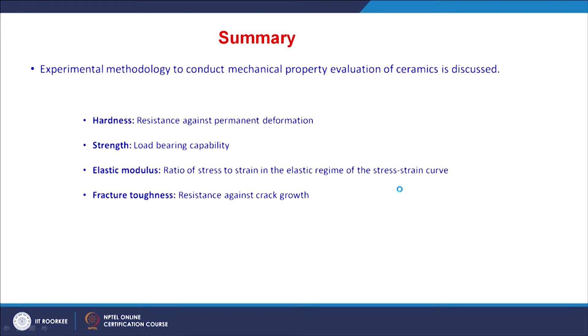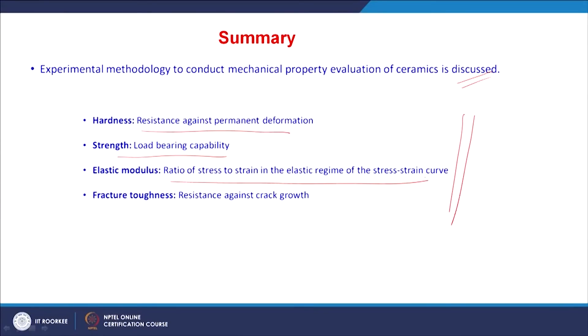Summarizing today's class: the experimental methodology to conduct mechanical property evaluation of ceramics was mainly discussed, focusing on hardness, strength, elastic modulus, and fracture toughness. Hardness is the resistance against permanent deformation. Strength is the load-bearing capability. Elastic modulus is the ratio of stress to strain in the elastic regime of the stress-strain curve. Fracture toughness is resistance against crack growth. The influence of these properties will be observed in different case studies for various ceramic and ceramic composite materials.